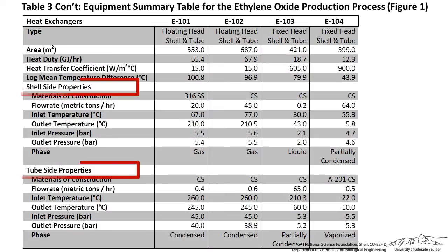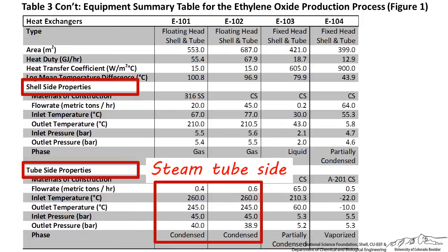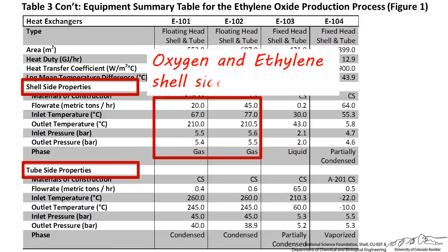For our ethylene oxide process, the fluids assigned to shell-side and tube-side flow are not explicitly stated under the properties heading. However, the flow rate of these streams, their inlet and outlet temperature and pressure, and phase are shown, which means we can deduce which fluid is assigned to each side. I chose to put high-pressure steam tube-side for E101 and E102 because these streams are at a very high inlet pressure of 45 bar, meaning the process oxygen and ethylene streams are shell-side.